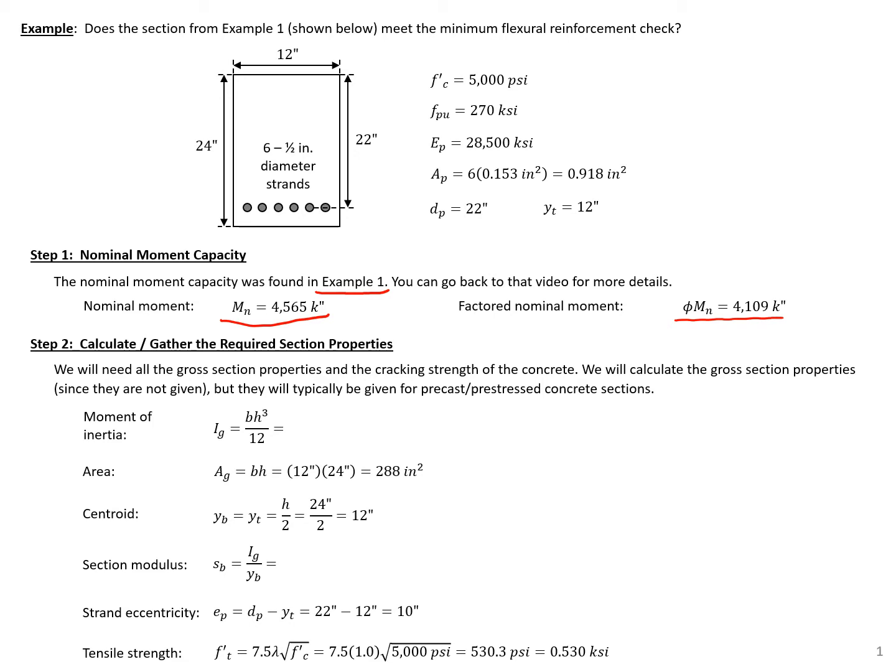Our next step is to calculate or gather all of our required section properties, and we're not given them here for this section. Typically, if you're using a precast, pre-stressed concrete section, it'll be a standardized section and you'll get these properties from a design chart. But here we need to calculate them. So we can calculate our gross moment of inertia, just one-twelfth bh cubed. So one-twelfth times 12 inches times 24 inches to the third gives us a gross moment of inertia of 13,824 inches to the fourth. Our gross area, just base times height, 288 square inches.